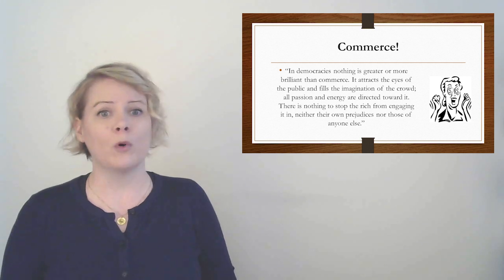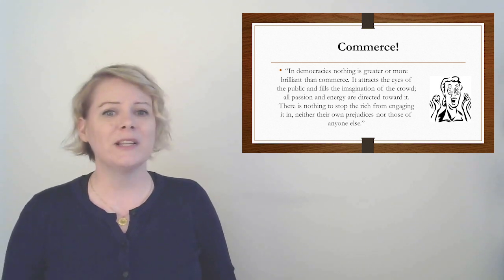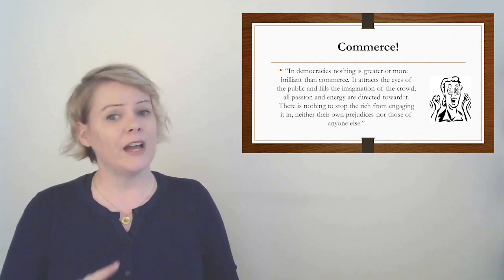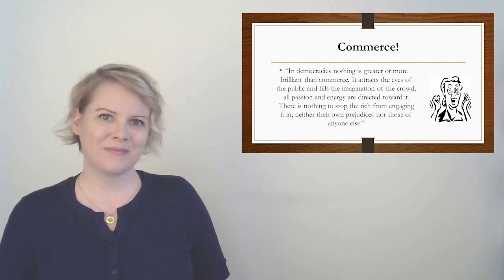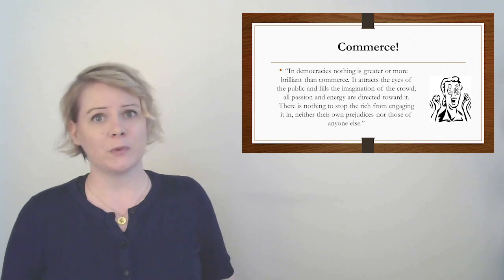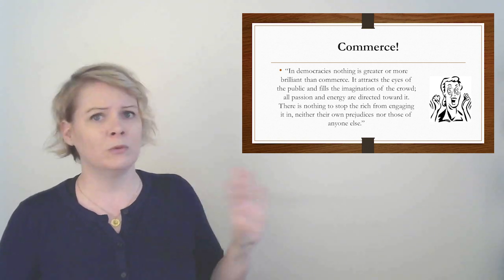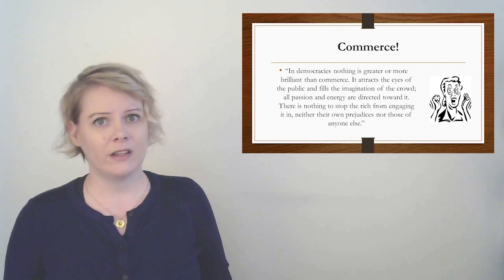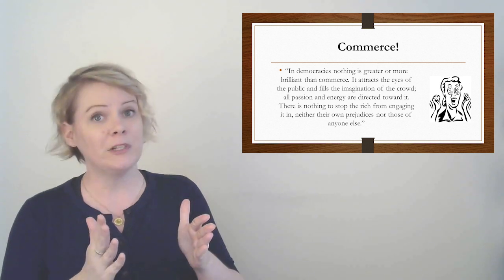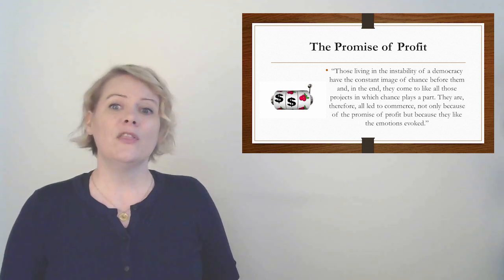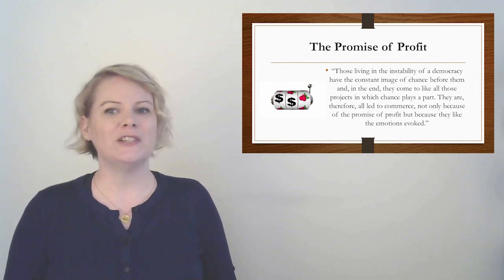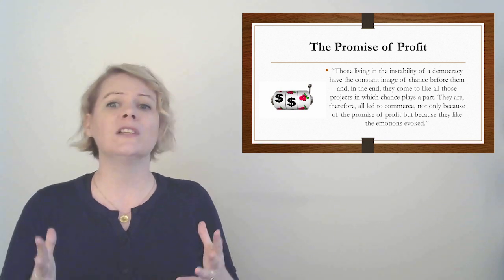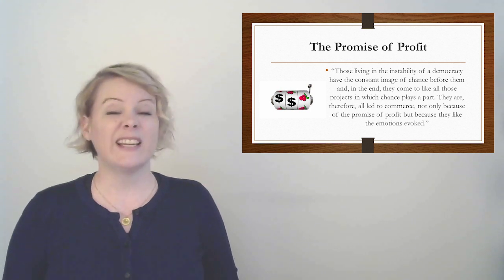So again, he's talking about how we are just obsessed. We are evening out our levels of wealth, but that doesn't mean we're happy. We still want more. More, more, more, more, more. Which leads us to the ways to wealth. The majority of the rich in democracies ceaselessly ponder, therefore, the ways to wealth and naturally turn their gaze towards trade and industry, which seem to them to be the quickest and the best way of obtaining it. Yeah, that's right. Get rich quick schemes are not new. Americans have kind of always been obsessed with getting rich as fast as possible. And that leads us to an obsession with commerce. In democracies, nothing is greater or more brilliant than commerce. It attracts the eyes of the public and fills the imaginations of the crowd. All passions and energy are directed toward it. There is nothing to stop the rich from engaging in it, neither their own prejudices nor those of anyone else. So basically, everyone is obsessed with commerce. Everyone is obsessed with industry. We're not just chilling on the farms anymore, making do, taking care of ourselves. We want money.